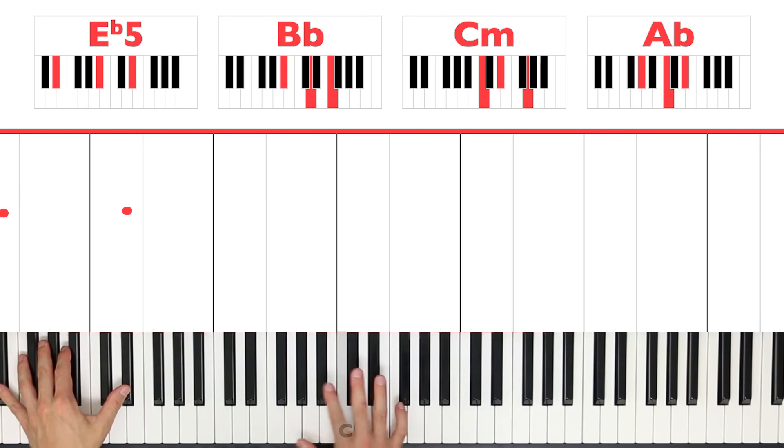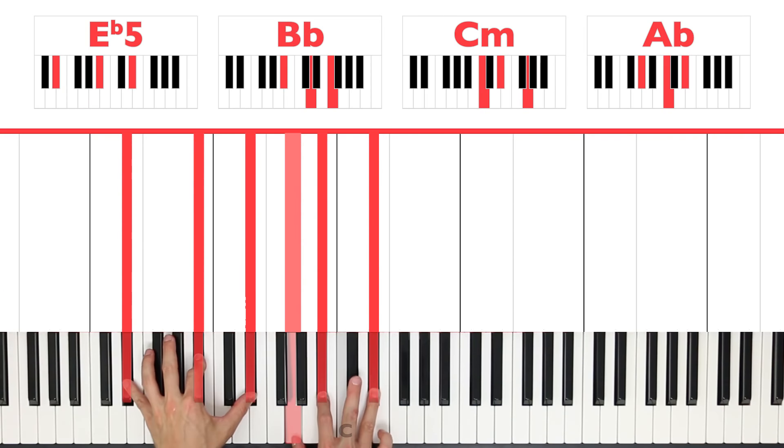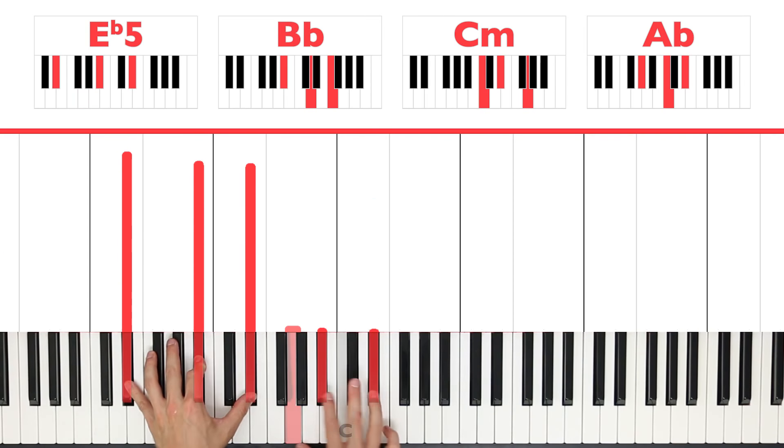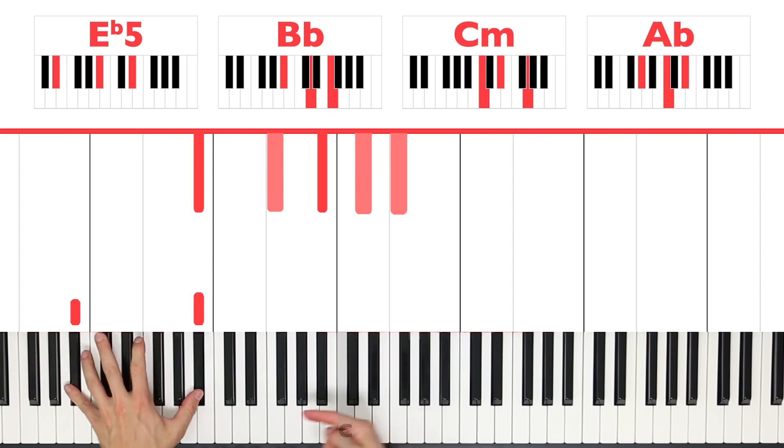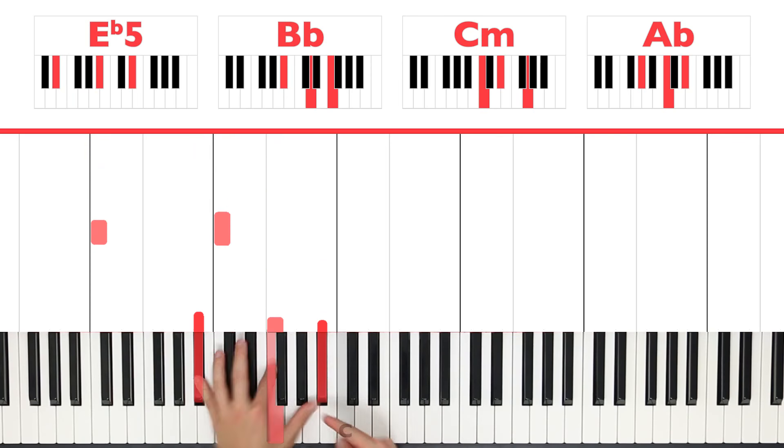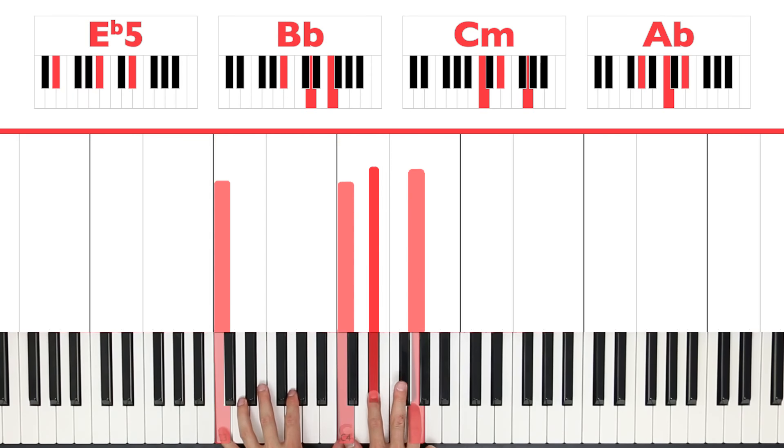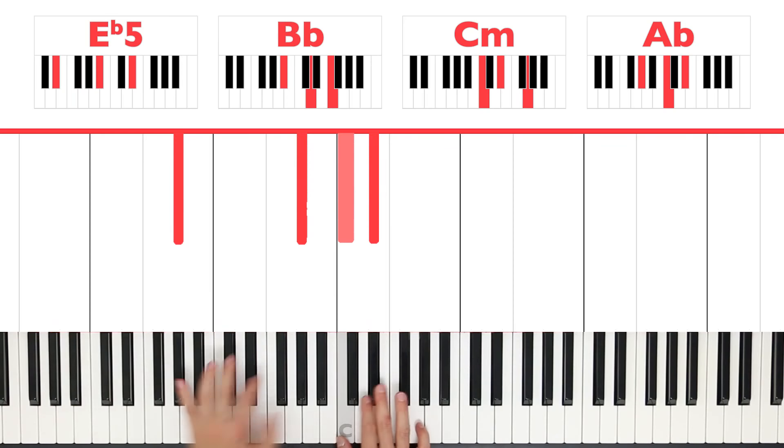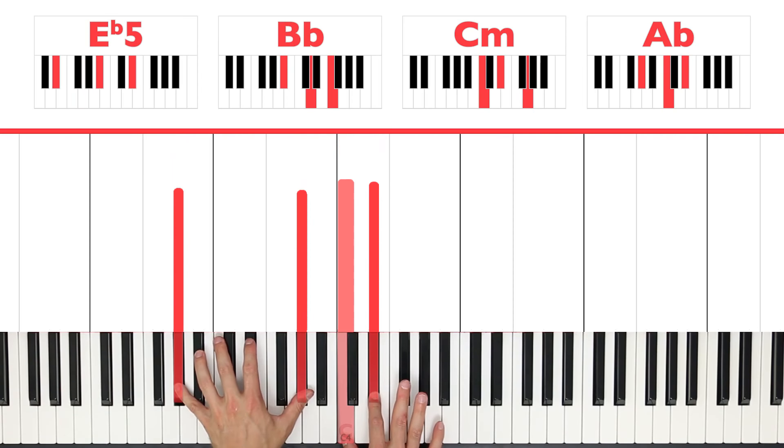For the right hand, for the first one you can just stay here. But the second one you can only play D and F, because the B flat is already being played by left. And the same goes here, just play these and just play these. If you want to, you don't have to do that.